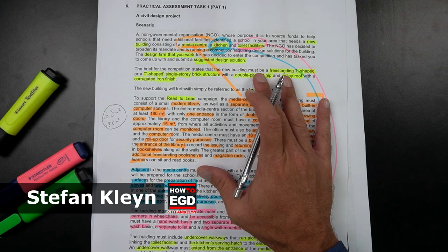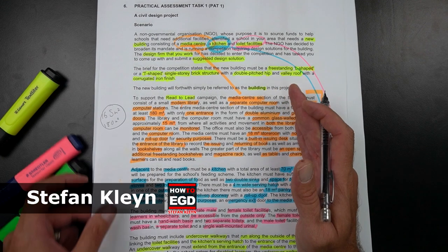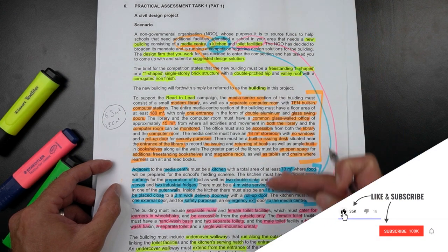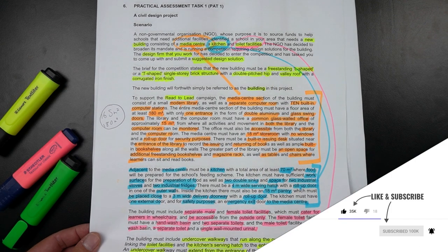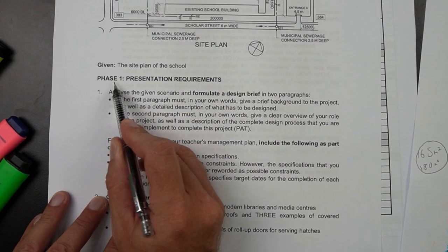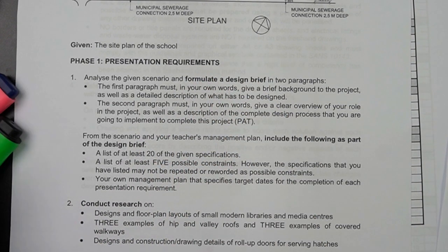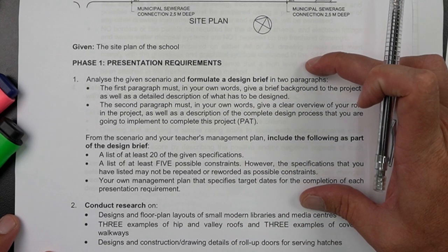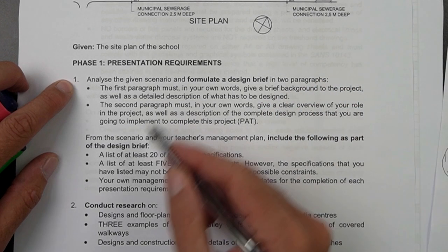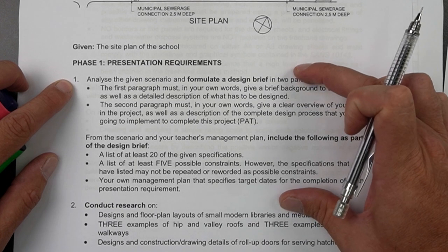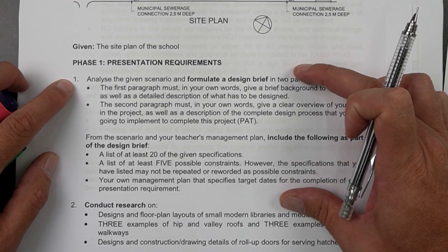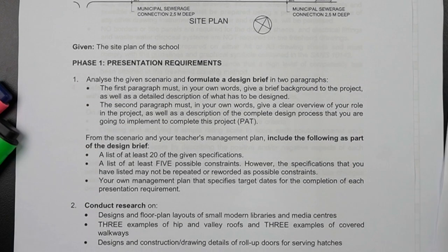Engineering graphics and design - this is episode 3 in my series on how to hack your PAD. Your actual PAD document should be looking similar to mine. You've seen in my previous video, episode 2, how I've taken you through the entire PAD. We're going to skip to the first actual page that you need to prepare for your PAD, found here on page 11, where they talk about phase one presentation requirements. We'll have our highlighters here and I'm going to talk you through exactly what is required.